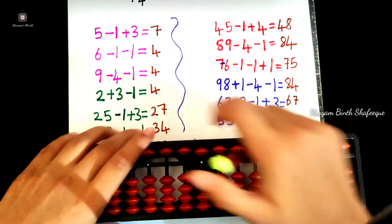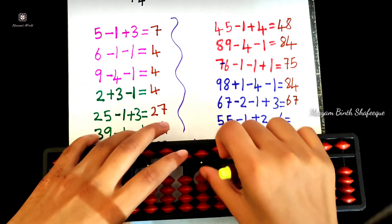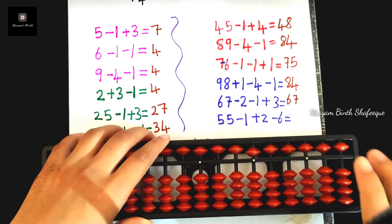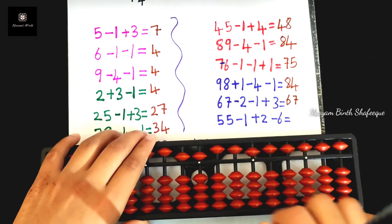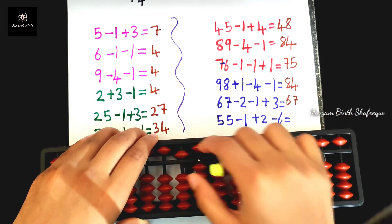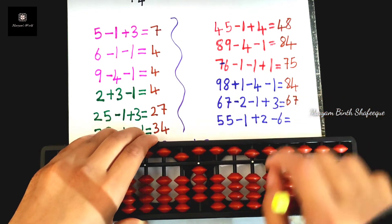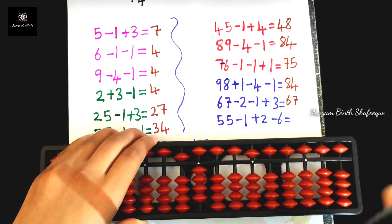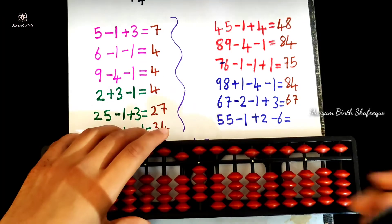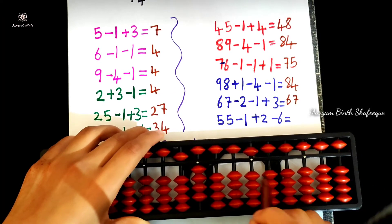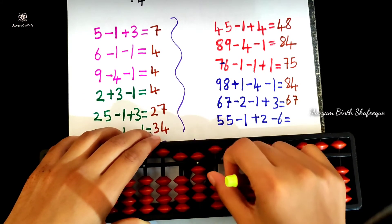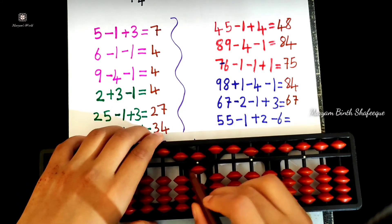55, minus 1, again. 55 minus 1, again. 55 minus 1. Minus 1 equals plus 4, minus 5. Plus 2, plus 2. We will apply the formula. Plus 2 equals plus 5, minus 3. Now 56.